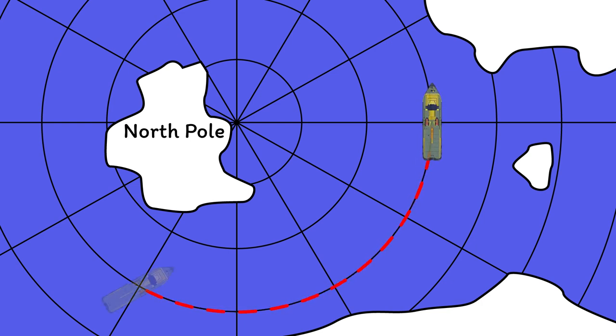But what if we took a great circle track instead? On the polar projection, the great circle track is a straight line. It's the shortest route between two points on the curved surface of a sphere.